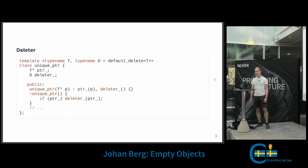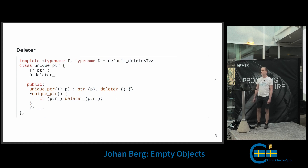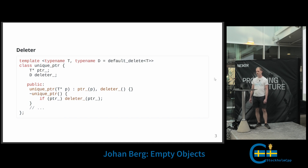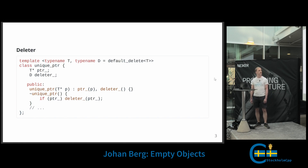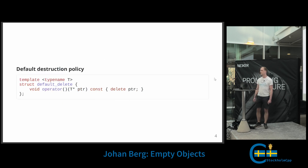We add another template parameter, D — this will be our policy class which holds the behavior we want. It will be a function object and it's known as a deleter. We will store the deleter as a member variable and inside the destructor, if the pointer is not null, we will call the deleter passing our pointer. We're also defaulting the template argument to default_delete, which is our default destruction policy and will call delete on the pointer.